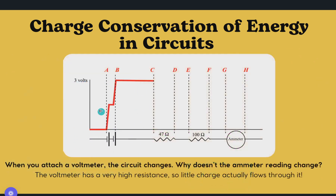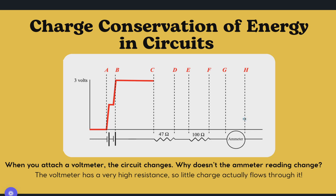At the batteries, the voltage goes way up to 3 volts because the batteries are charging the circuit. Then it begins to drop — it will drop a little bit, stay steady, then drop pretty hard, and then remain constant. The voltmeter has high resistance, so little charge flows through it, which is why the ammeter reading doesn't change.